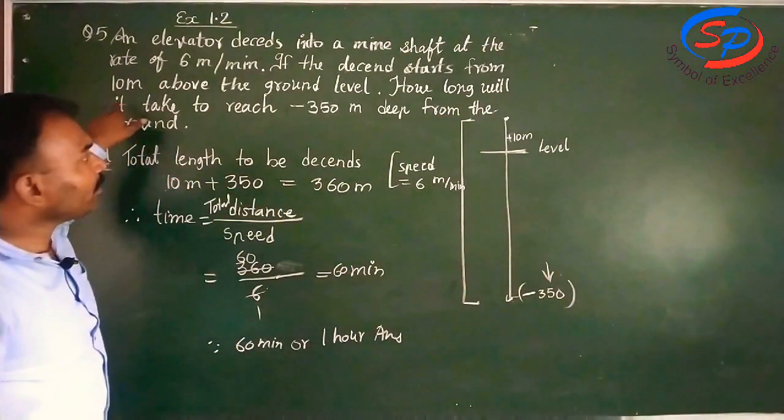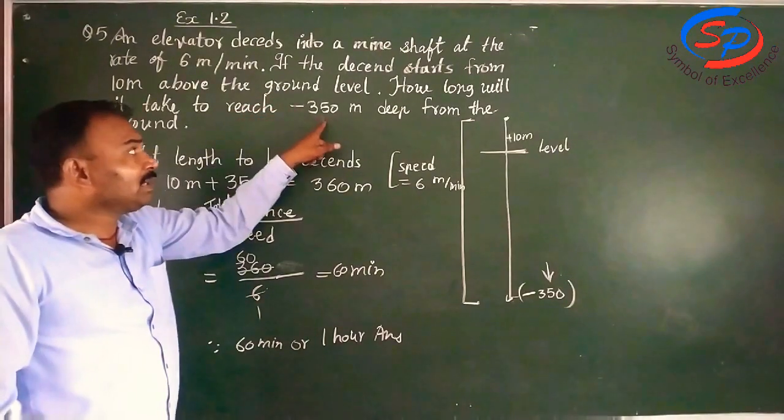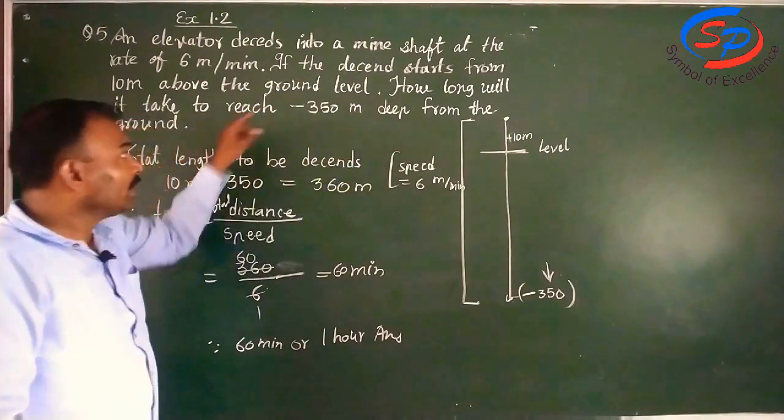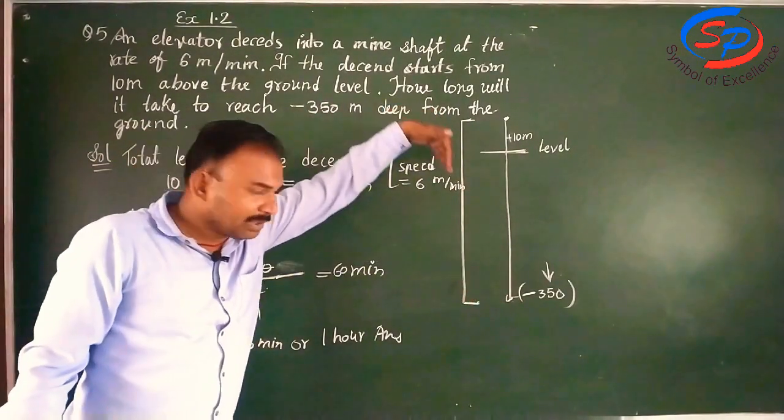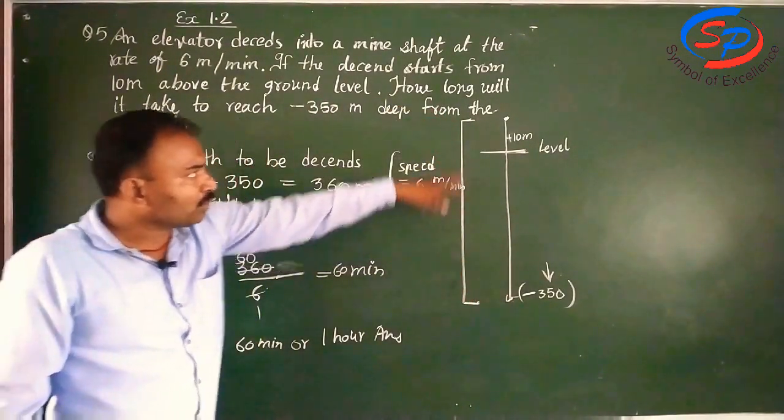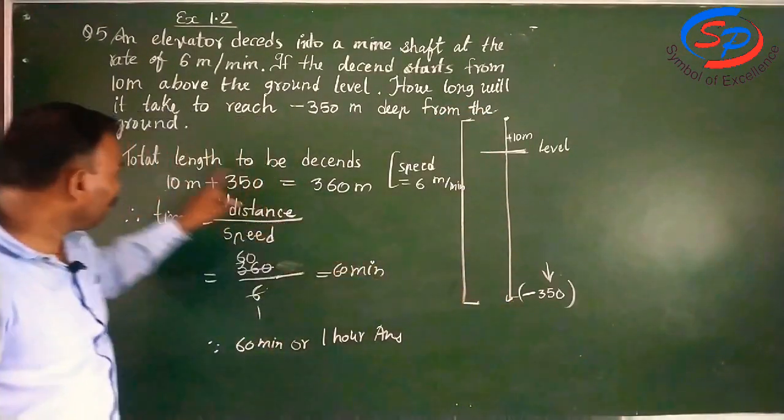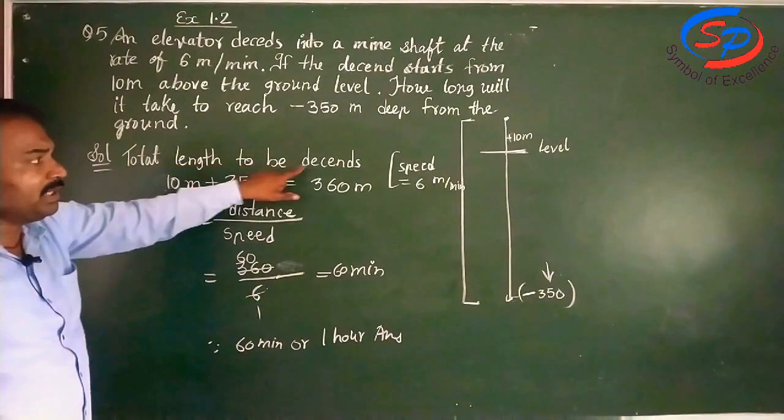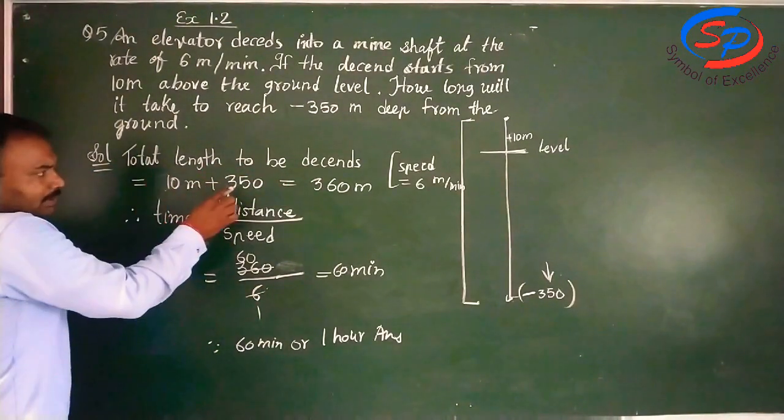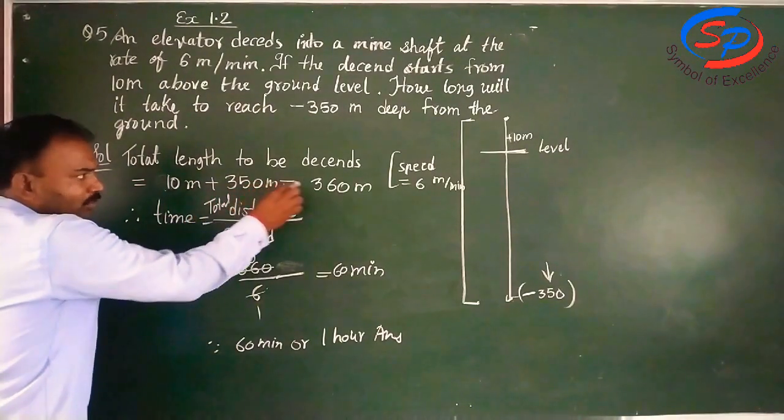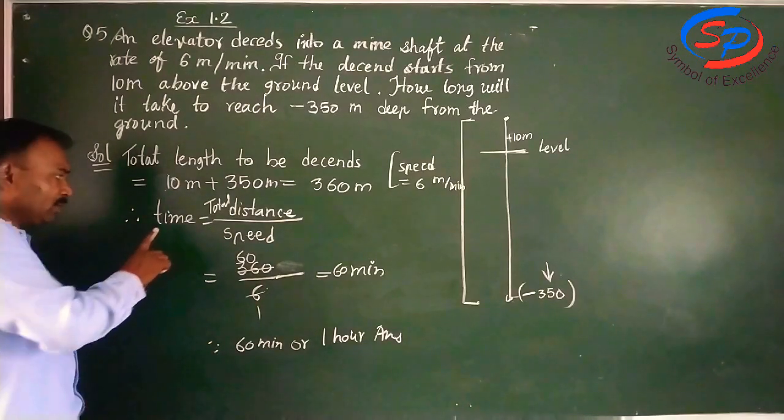Then they have said, how long will it take to reach minus 350 meter deep from the ground? The minus sign is showing depth, that we are going into the depth of the earth. So what will be the total distance? Here separately: 10 plus 350. So total length to be descended, that is equal to 10 meter plus 350 meter. So total will be 360 meter.